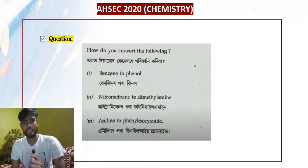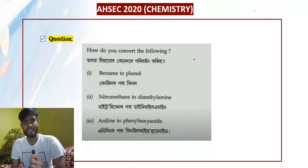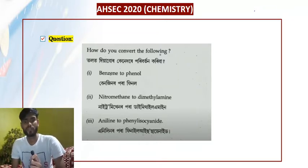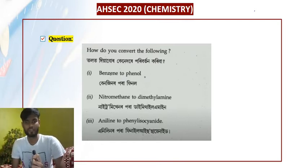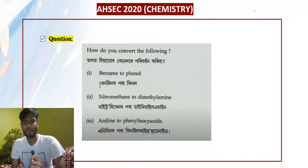I'm going to discuss the organic questions. We have two questions. There are two possible videos. I'm going to discuss them one by one. The first question is: how do you convert the following? Benzene to phenol, and nitromethane to dimethylamine — one by one.